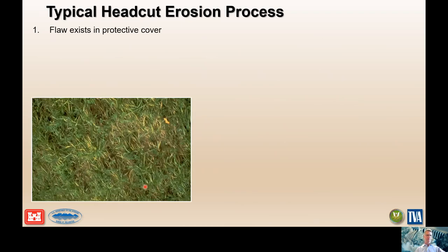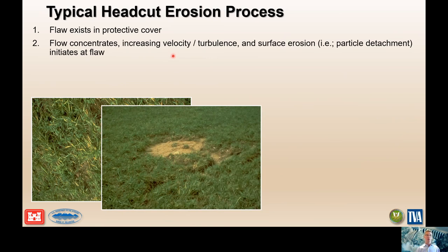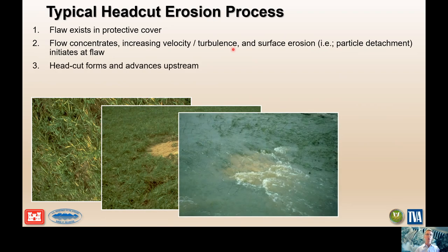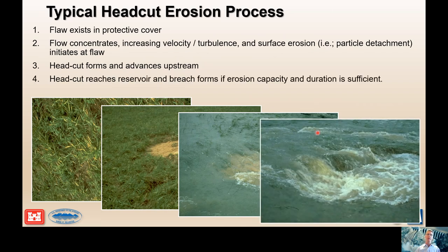This slide shows a typical head cut erosion failure sequence, where some flaw in the protective cover — a topographic feature that concentrates flow and changes flow regime — causes increased velocity, thickness, and turbulence. The particles of soil or rock exceed the shear strength of the material, are plucked out, and carried downstream. The removed particles enlarge a scour area that slowly advances upstream toward the crest or weir structure, ultimately reaching the crest of a dam or levee or the spillway where it can breach the dam, if flow capacity and duration are sufficient.